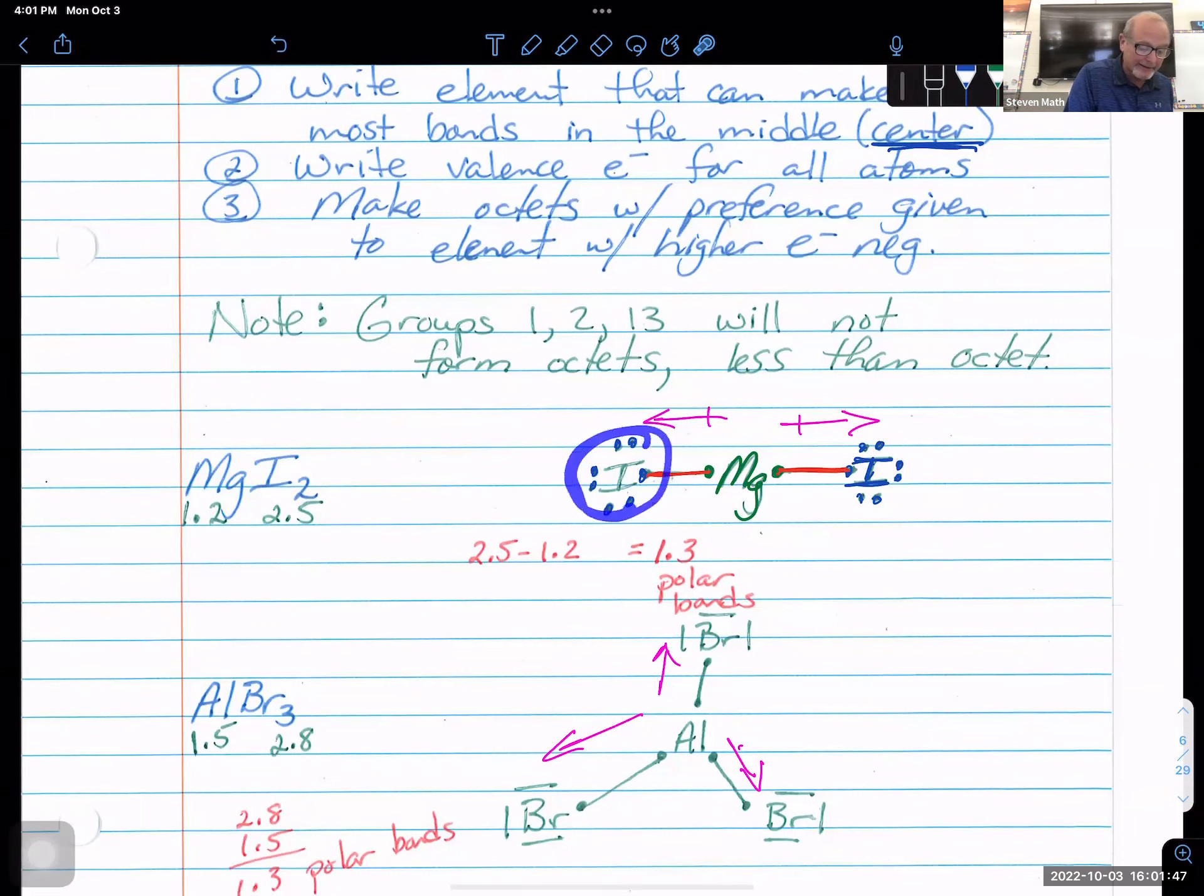Now let's look at the dipoles because we have 2.5 minus 1.2. This is a 1.3 E neg difference. This is also a difference on the periodic table from magnesium all the way over to iodine. That's a huge separation on the periodic table. And when you have that kind of separation on the periodic table, you're going to have very polar things. But this is just polar. And so which way to the dipoles? They always go toward the higher electronegative element. So the iodine goes out. Iodine's got an octet. Magnesium didn't get an octet. Iodine did.